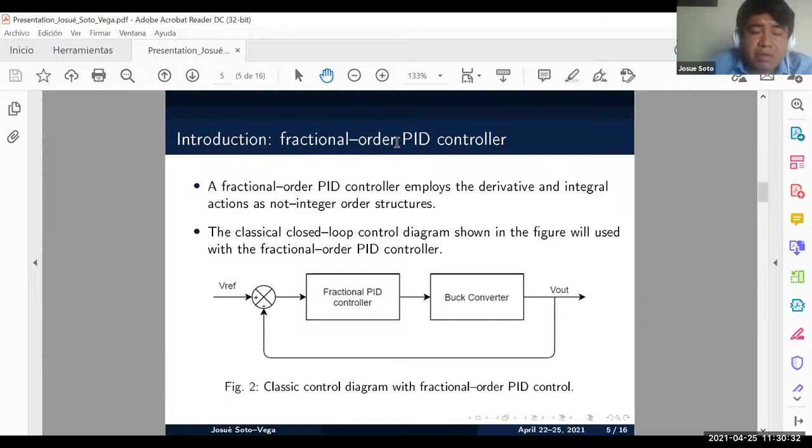To control the buck converter it was decided to use a closed loop structure. The classic control closed loop diagram is shown in figure two and the fractional control was implemented using this structure.